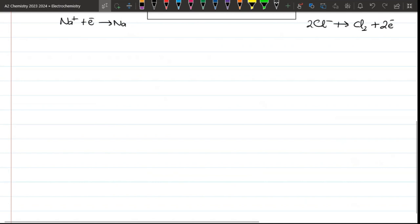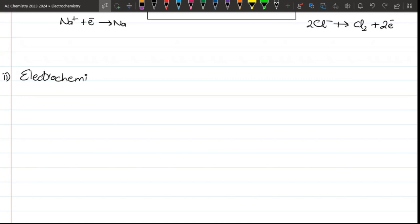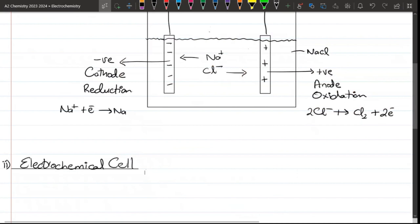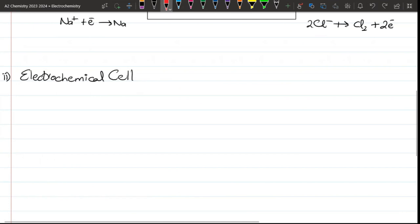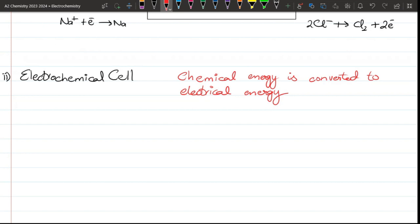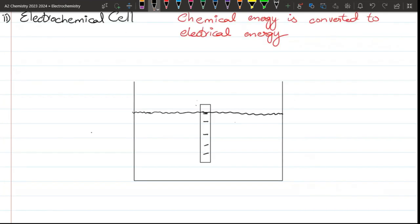The second, number 2 cell, the other type of cell we call electrochemical cell. In this, chemical energy is converted to electrical energy. This example is what I will do.